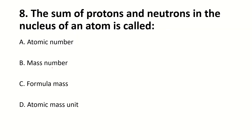The sum of protons and neutrons in the nucleus of an atom is called dash. The right answer is B: mass number. We also call it atomic weight. Both names are used.